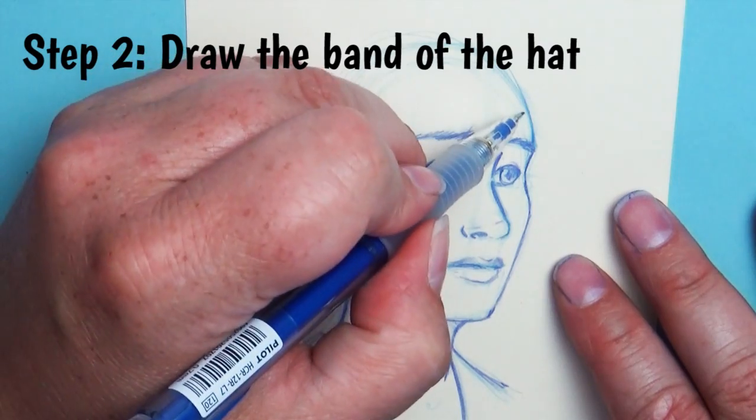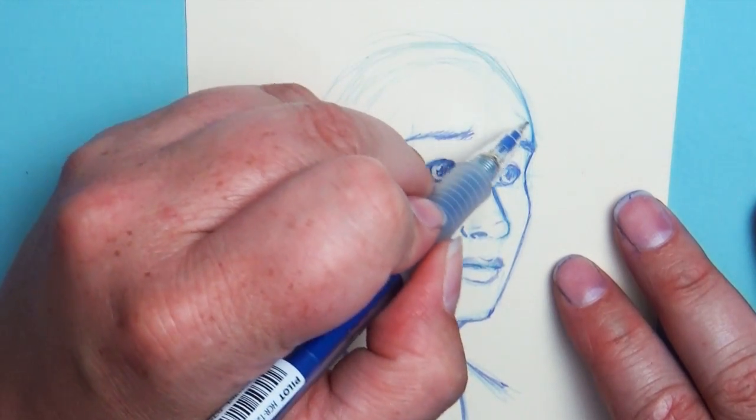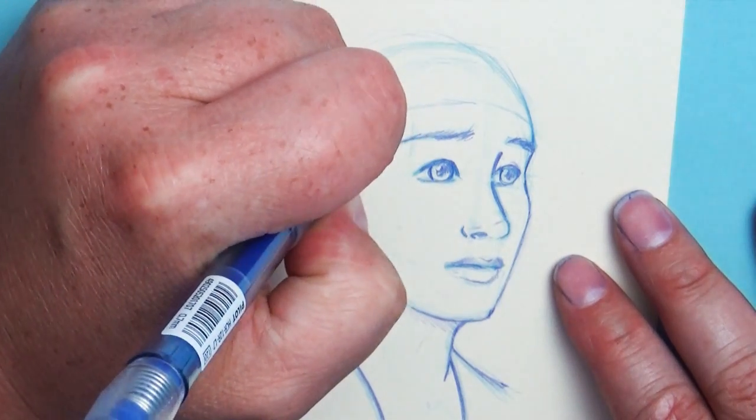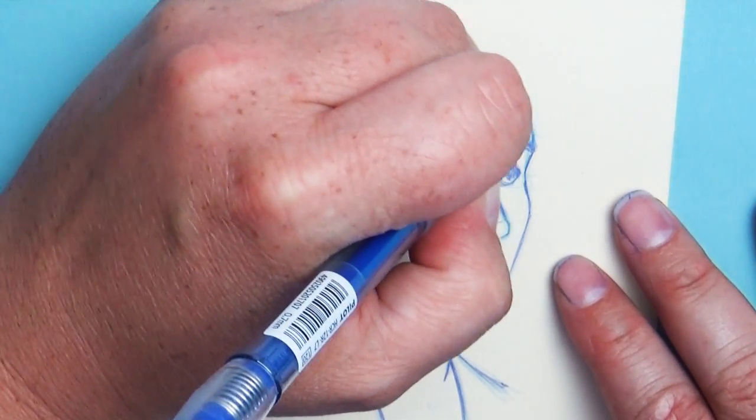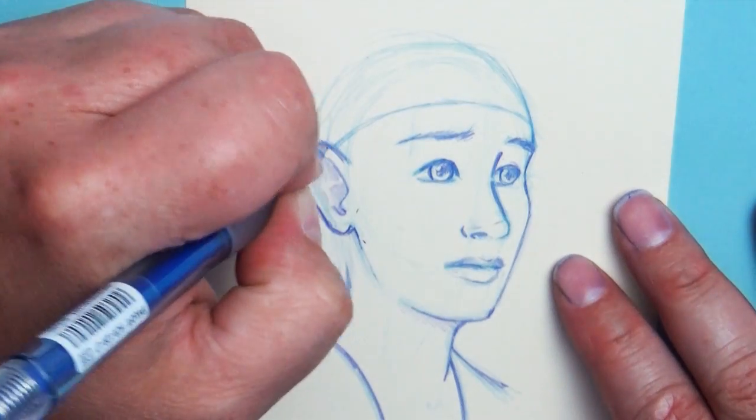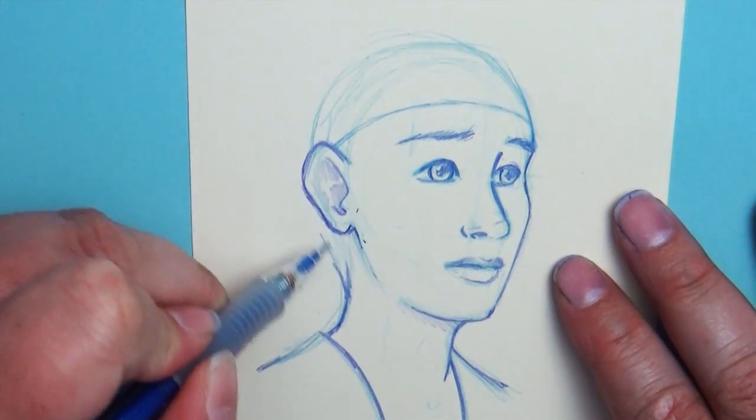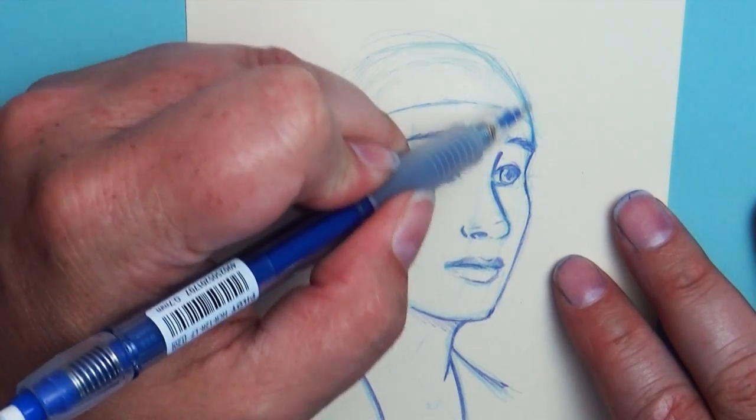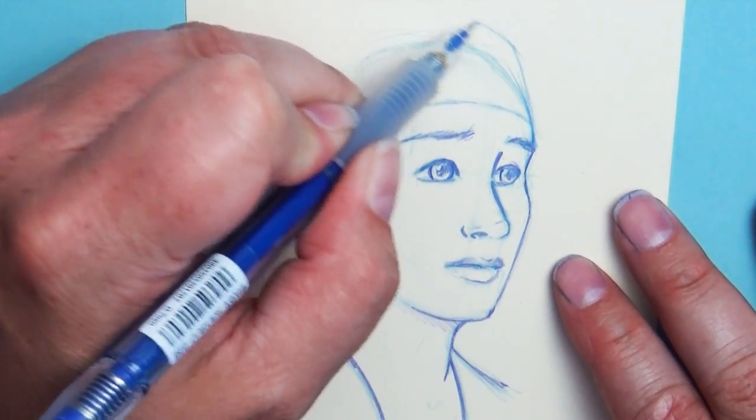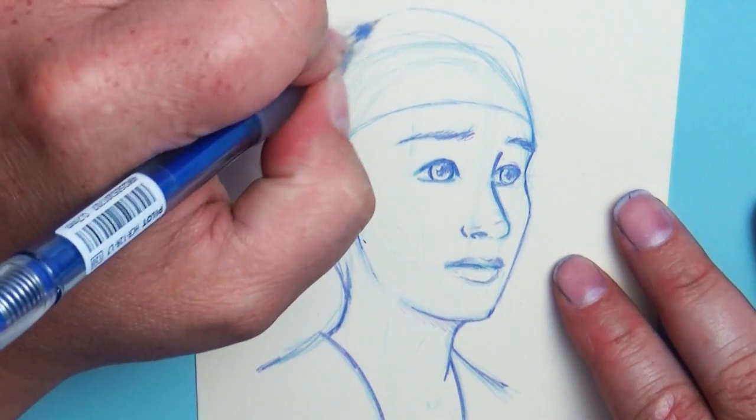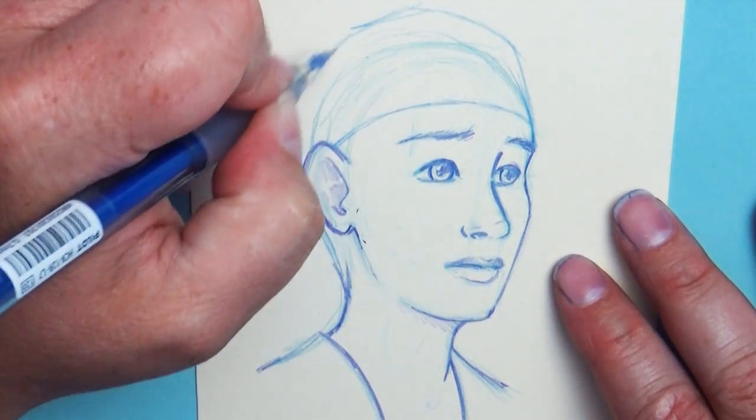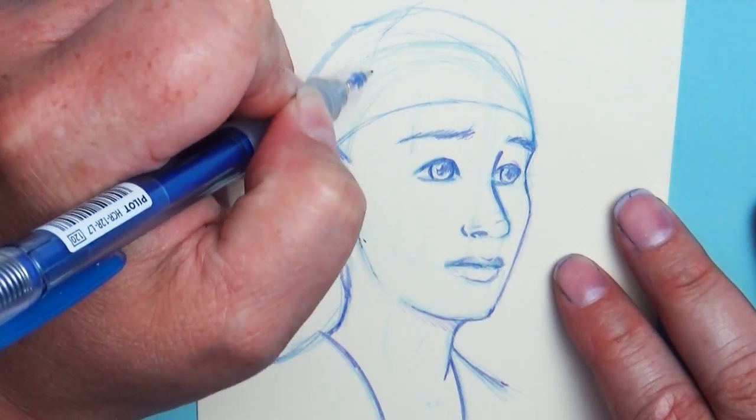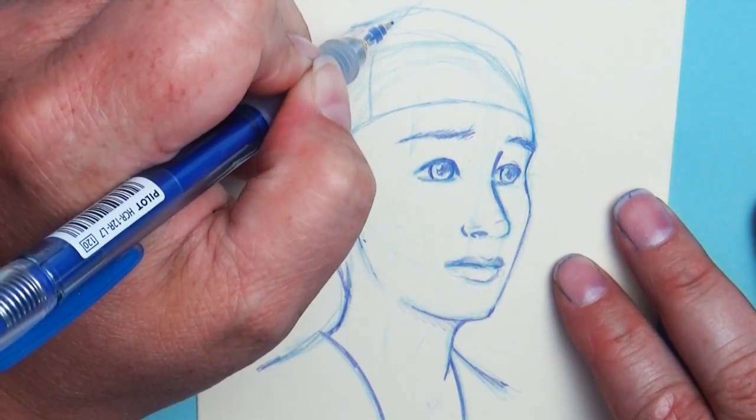Step number two is we're going to create an arched line that represents the band of the hat. Now remember, this isn't going to be a straight line across the head - we want to have it arch up a little bit. That's going to help give the impression that it's wrapping around the head. After that, we're going to create the cap part. Here's a tip: generally most hats don't fit snugly over the entire head. There's a little bit of space between your head and the top of the hat. So when I draw that shape, I'm going to have it come up a little bit higher than the actual head. Again, this isn't the time to get into detail - we're just blocking in the shapes.